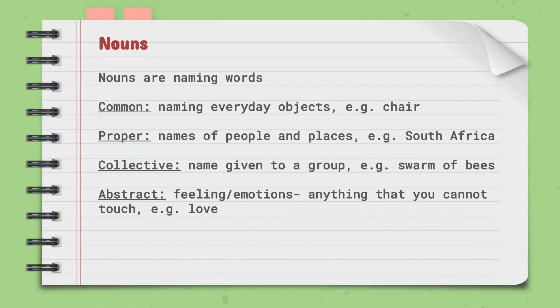Let us begin this video talking about nouns. Nouns are naming words. There are different types of nouns that you will see on the screen. Common nouns are naming everyday objects, for example, a chair.